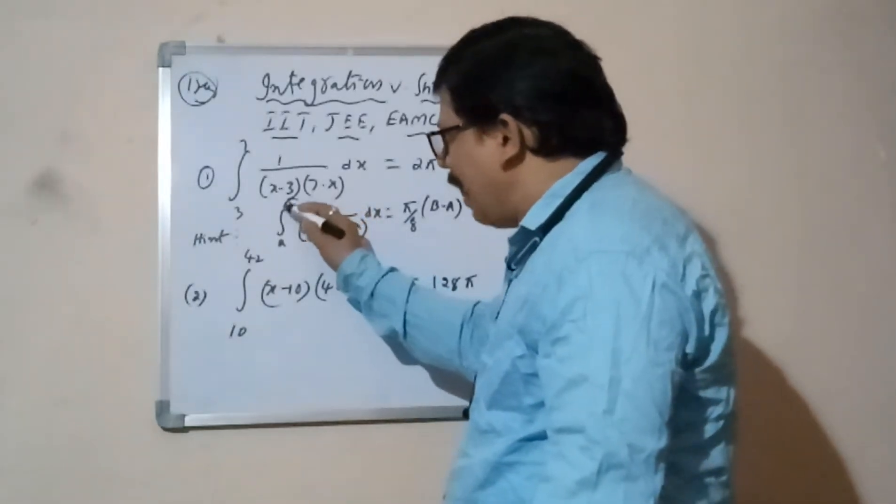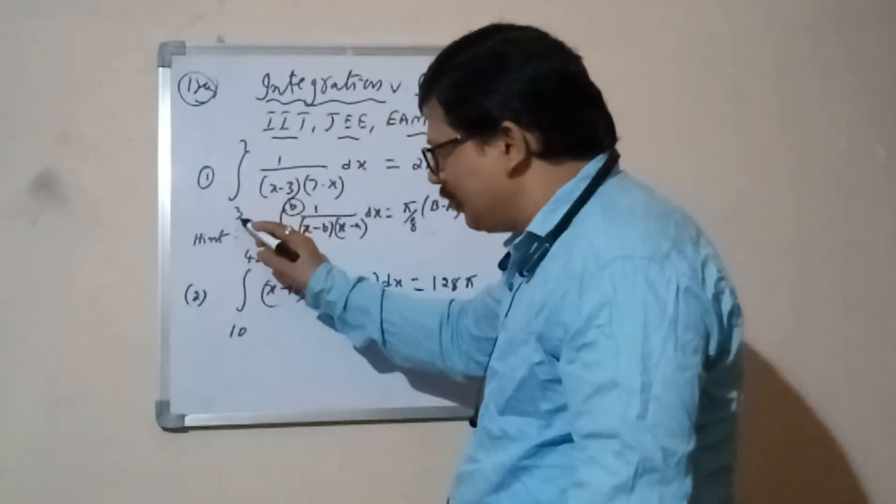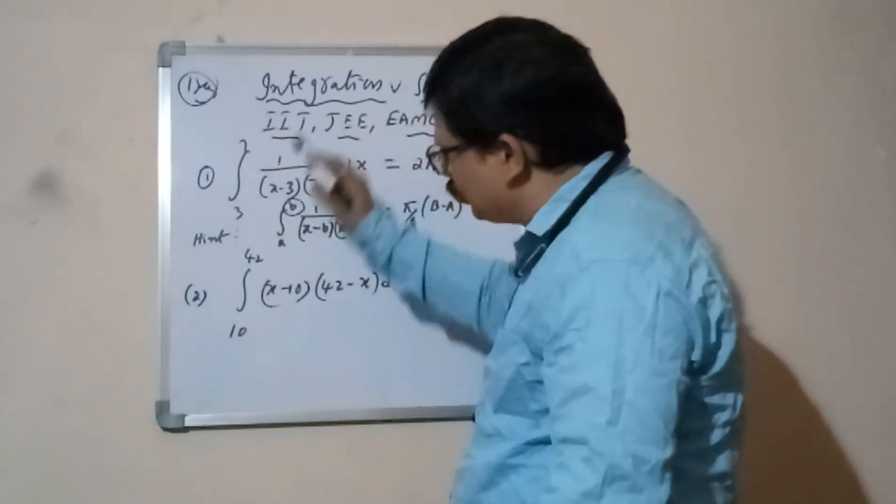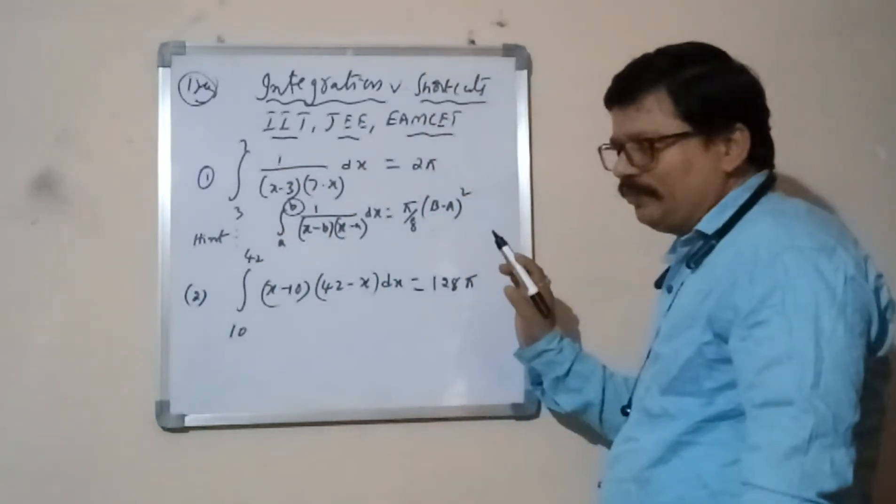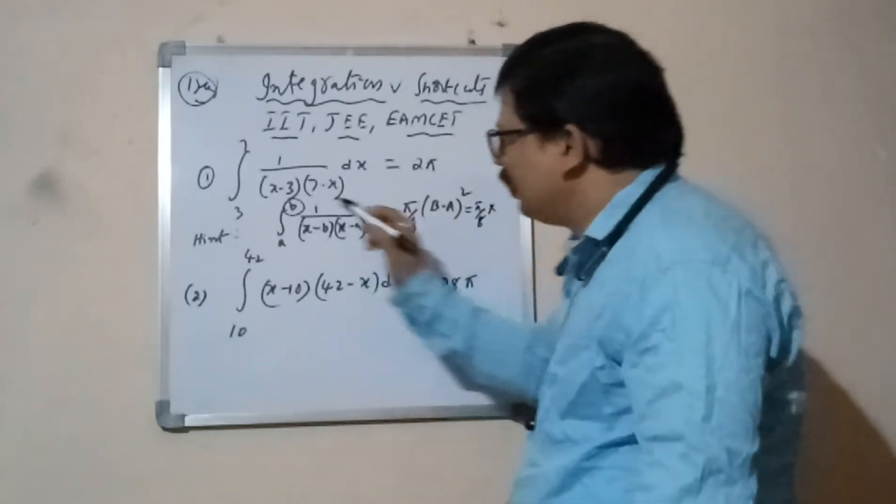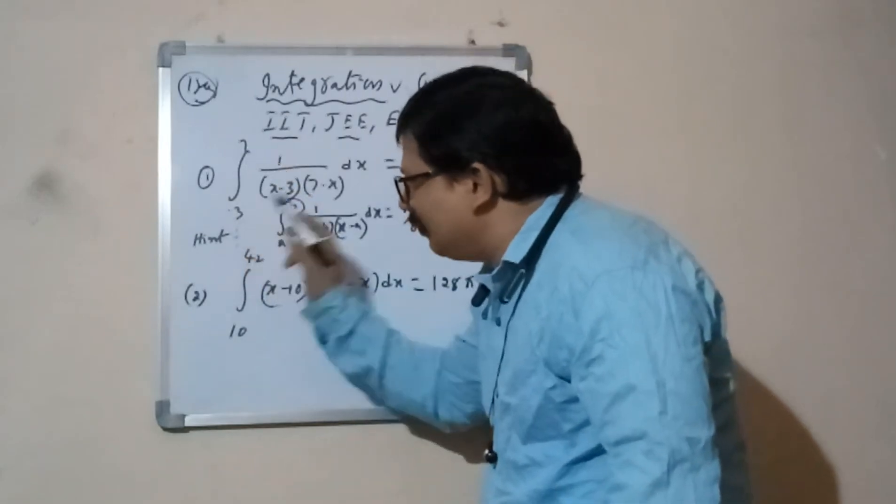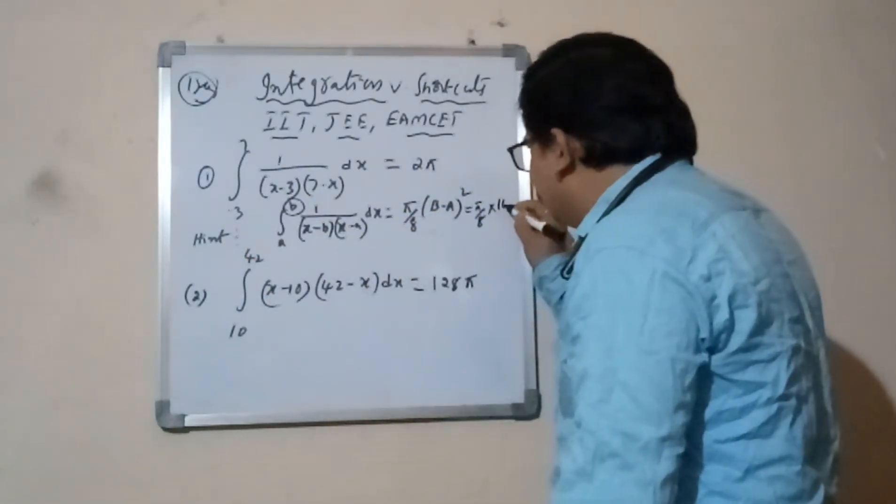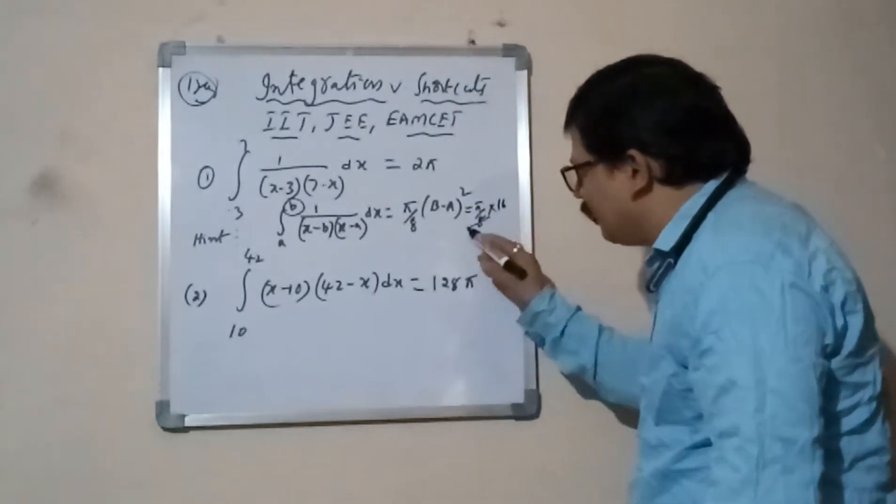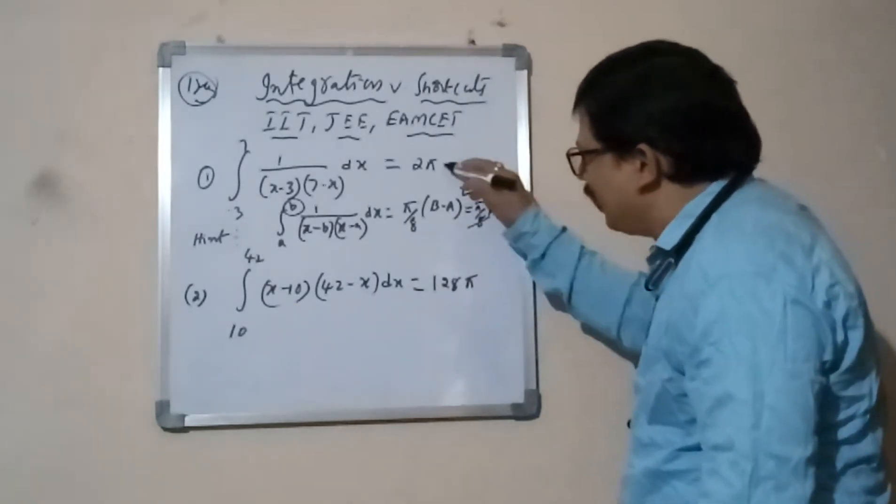Now 3 to 7, this type sums, this formula only, standard formula. Here, π by into 3 minus, 7 minus 3 is 4, 4 square means 16. Here π/8, 2π, that's all, finish.